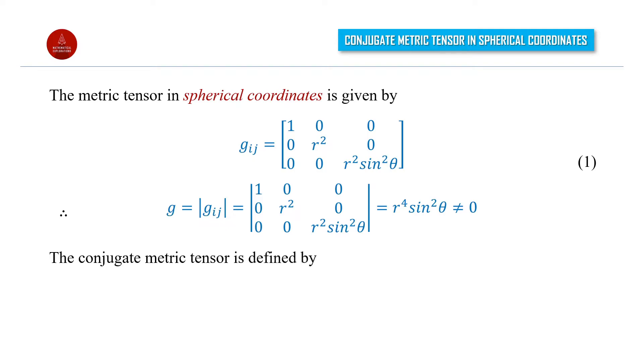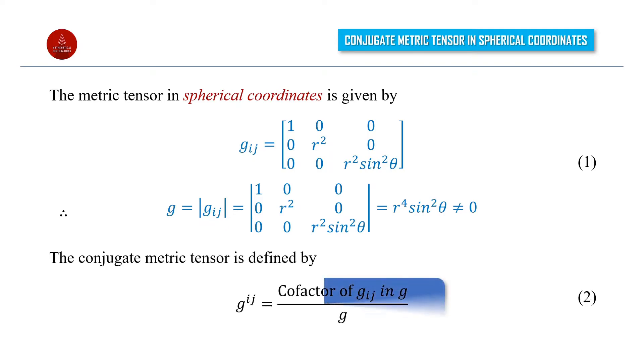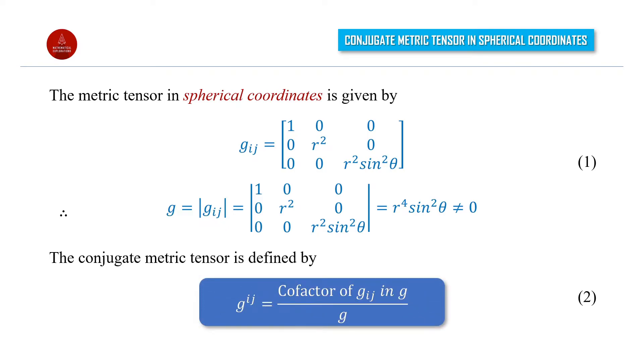The conjugate metric tensor is defined by g^ij equal to the co-factor of gij in g, divided by g.